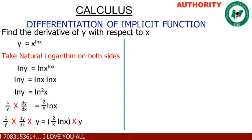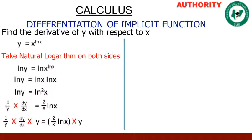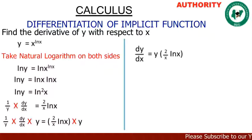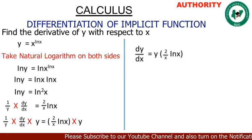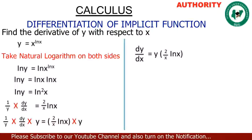On the left side, (1/y) · y = y/y = 1, so we have dy/dx = y · [2/(x · ln x)]. Recall that our original function is y = x raised to the power ln x.